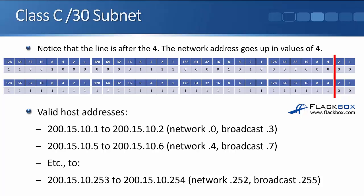The way you can calculate the different valid subnets: notice where the line is — it's after the number 4. So the network address is going to go up in values of 4. The first network address is .0, the next is .4, the next is .8, .12, .16, and so on. Because we know the network addresses we can work out the broadcast address and valid IP range. Here it's going up in values of 4. The first subnet is .0 as the network address; since the next range starts at .4, the broadcast must be .3, leaving .1 and .2 as valid hosts. The next subnet starts at .4, the next at .8, so broadcast is .7, leaving .5 and .6 available for hosts.